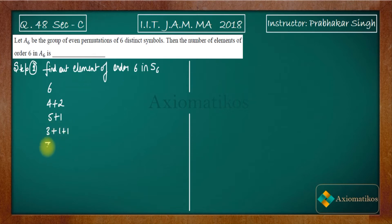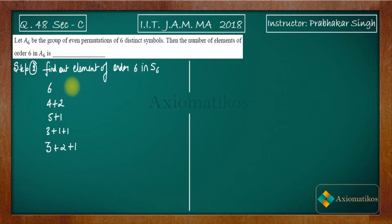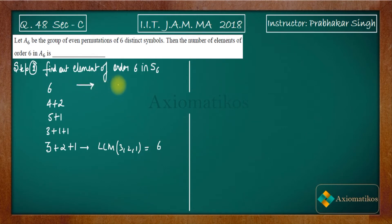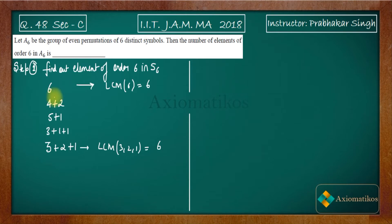Three plus one plus one is also a partition, three plus two plus one is also a partition. There are many partitions, but the trick is: if you want to find elements of order six, you look for partitions whose LCM is six. The LCM of three, two, one is six, so there will be elements of order six in S6. There are only two such partitions giving LCM of six.